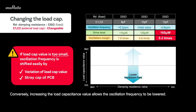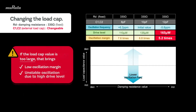Conversely, increasing the load capacitance value allows the oscillation frequency to be lowered. However, if the value of the capacitance is too large, there is a possibility that the oscillation margin will decrease, and oscillation stability problems may occur due to the high drive level. This also requires attention.